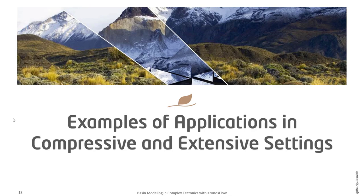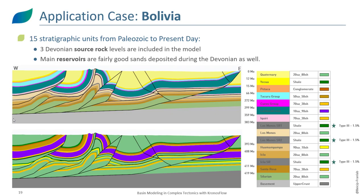Let's move to case studies in both compressive and extensive settings. The first is in Bolivia. This is the present-day balanced section with 15 stratigraphic units of different ages and lithologies. Within these 15 units we have three main source rocks — thin shelly layers — and main reservoirs represented in orange and yellow, all within the Devonian units.